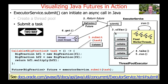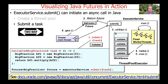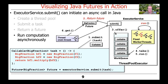What you get back from that is a future to the results. In this particular case, we're going to pass in a task that will multiply two big fractions together. We submit that to the executor service and get back a future that, when the computation is done, will be redeemable for the multiplied result of those two big fractions. Once we've submitted the job, it gets queued up for execution inside the thread pool.